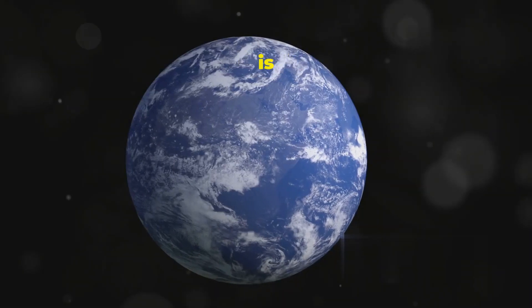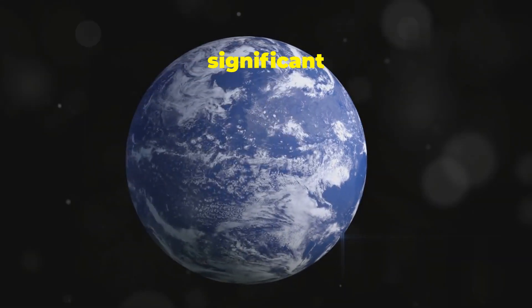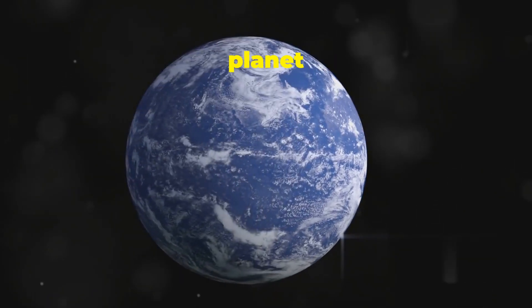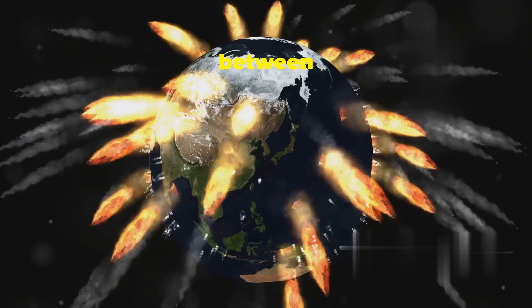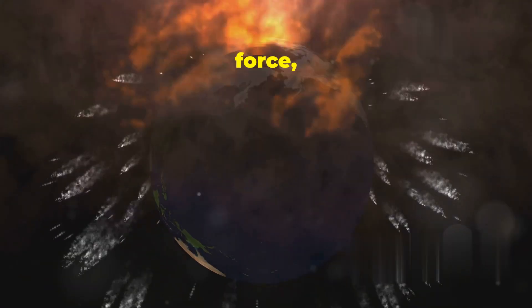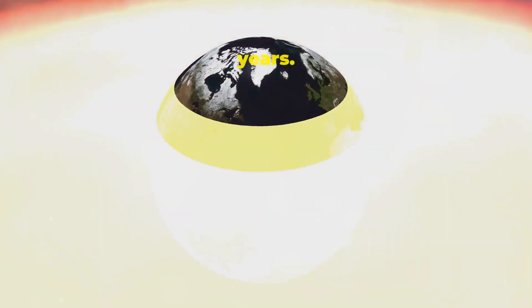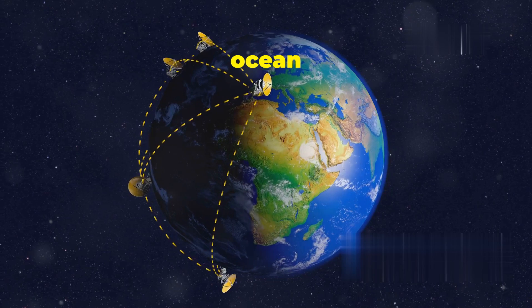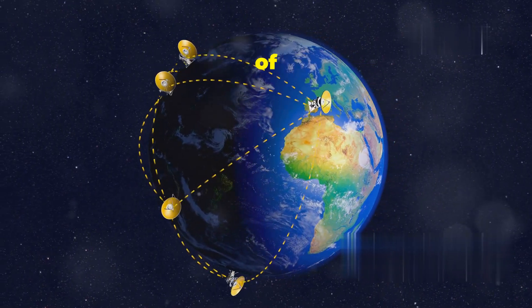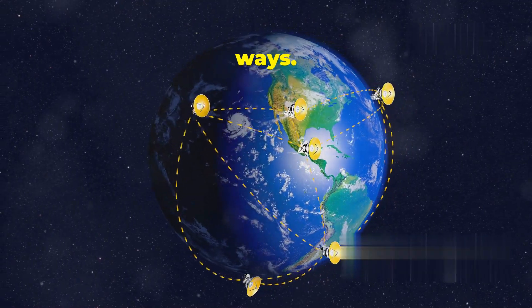The realization that Earth is not a perfect sphere but an oblate spheroid marks a significant milestone in our understanding of the planet we call home. This subtle bulge at the equator, a testament to the interplay between gravity and centrifugal force, highlights the dynamic nature of our planet and the complex forces that have shaped it over billions of years. From the accuracy of GPS systems to the flow of ocean currents, the consequences of Earth's oblateness are far reaching, influencing our daily lives in profound ways.